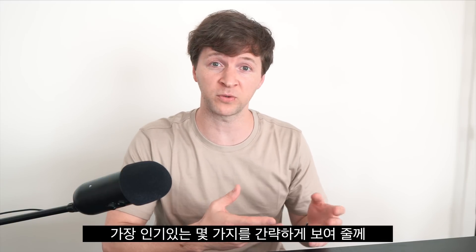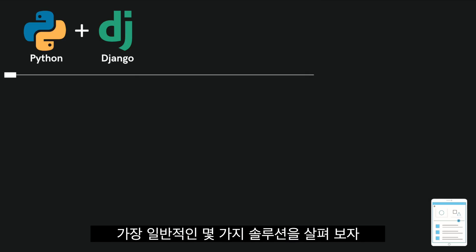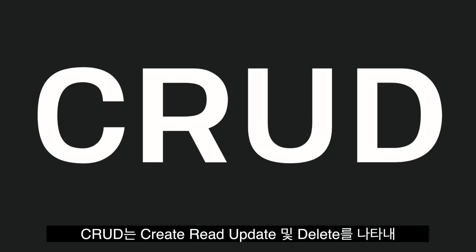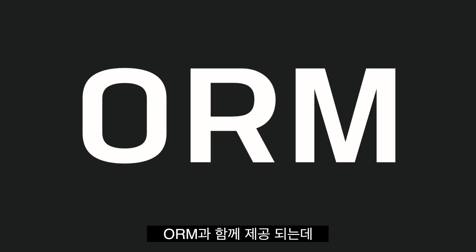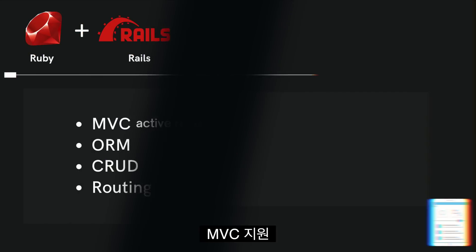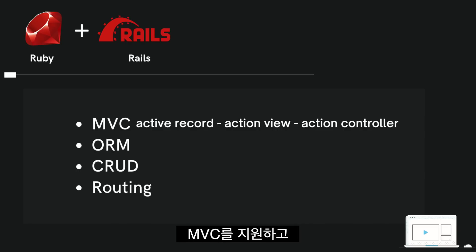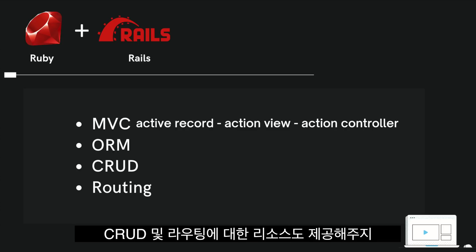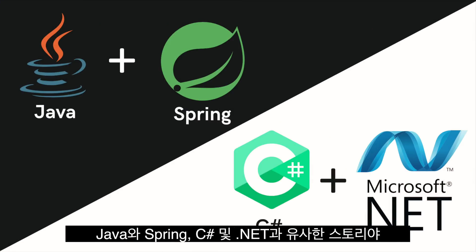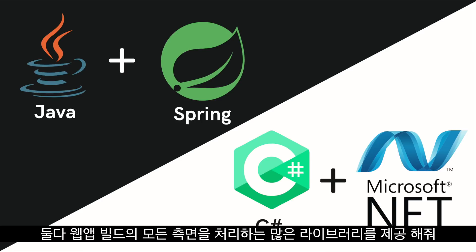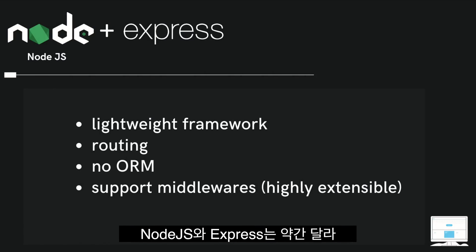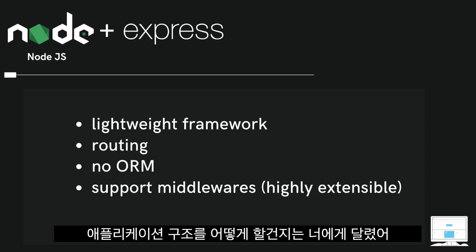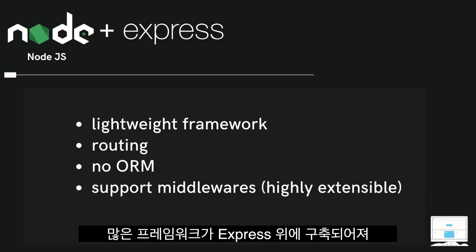Let me briefly show you a few of the most popular language and framework combinations. Python and Django — Django handles everything: CRUD (Create, Read, Update, Delete), comes with an ORM (Object Relational Mapping), and supports MVC. Same with Ruby on Rails, which embraces MVC through ActiveRecord, ActionView, and ActionController — ActiveRecord being an ORM for Ruby — and provides resources for CRUD and routing. Java with Spring and C# with .NET both offer many libraries covering all aspects of building a web app. Node.js with Express is a bit different — Express is a lightweight framework with routing but no built-in ORM, leaving application structure up to you. It supports middlewares, and you can write custom middleware for anything. Many frameworks are built on top of Express.js.